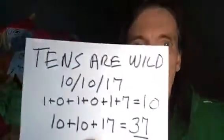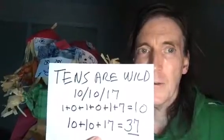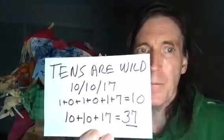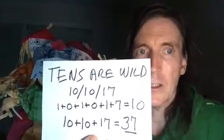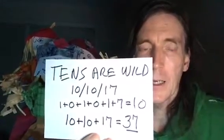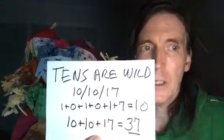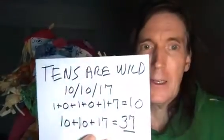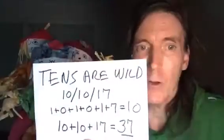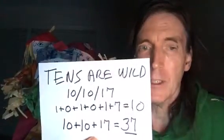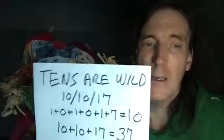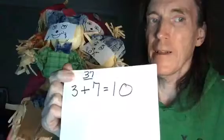Here's what I mean — tens are wild. You have 10/10/17: October, 10th month, 10th day. If you look at all the digits in 10 10 17 and go one digit at a time: 1 plus 0, 1 plus 0, 1 plus 7 — that equals 10. Then if you add them up as whole numbers, 10 plus 10 plus 17 equals 37.